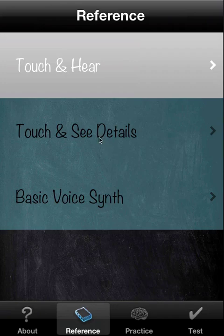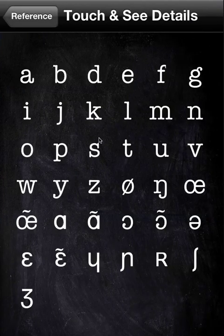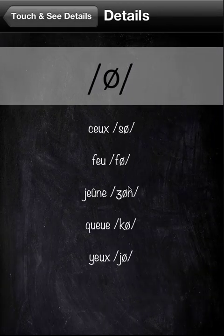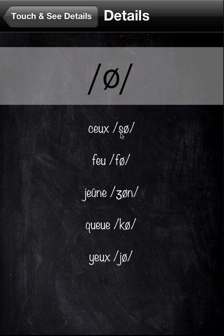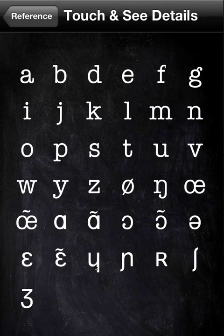That's it for the touch-to-hear reference. Now we're going to something that seems similar but is a bit different. You have the IPA symbol again, and then you have a few example words that contain this symbol — for instance: jeune, feu, seu, que, yeu. So it'll help you develop a sensitivity to this particular sound.